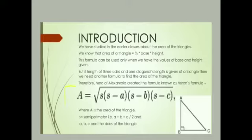The formula is A equals under root s minus a, s minus b, and s minus c, where A is the area of the triangle, s is the perimeter, and a, b, c are the sides of the triangle.